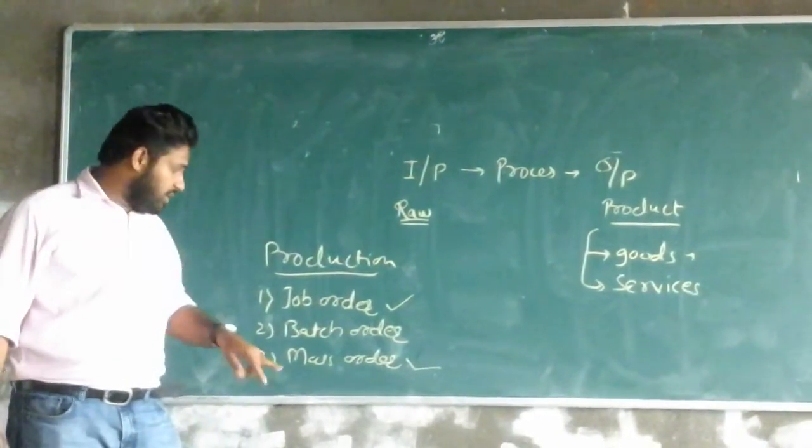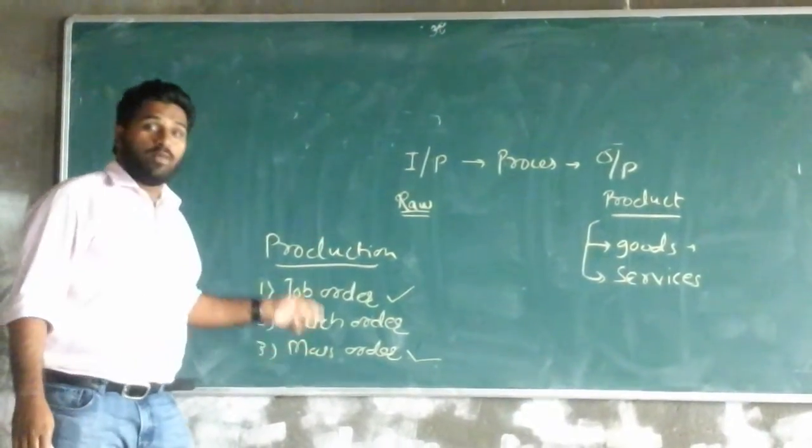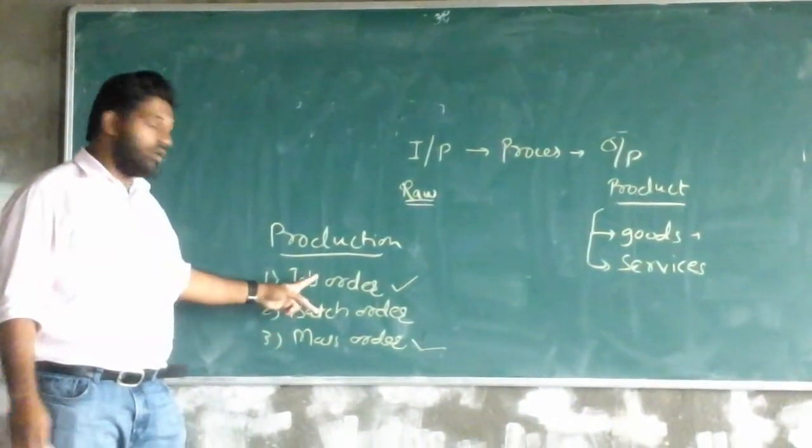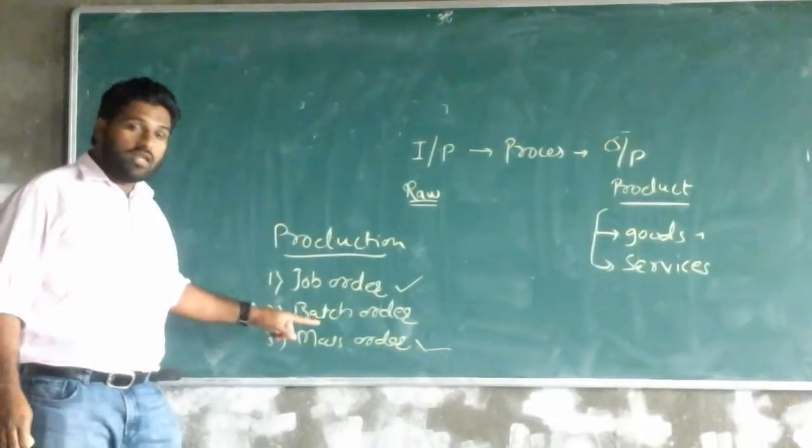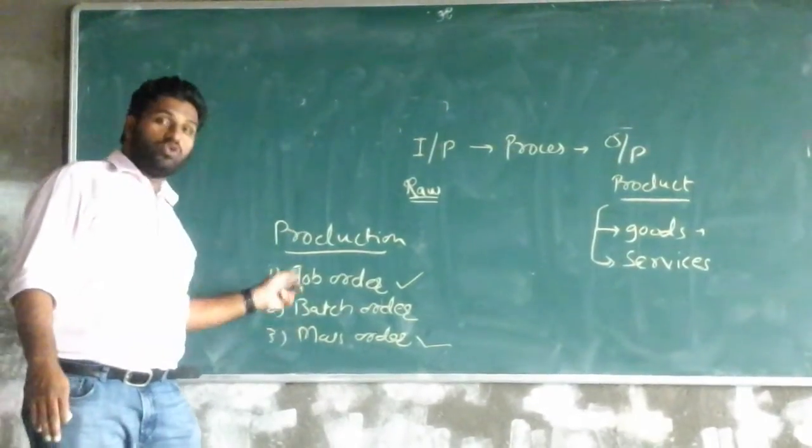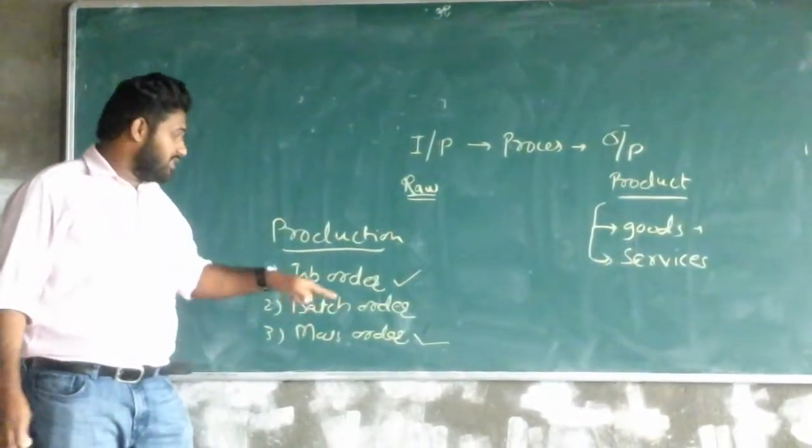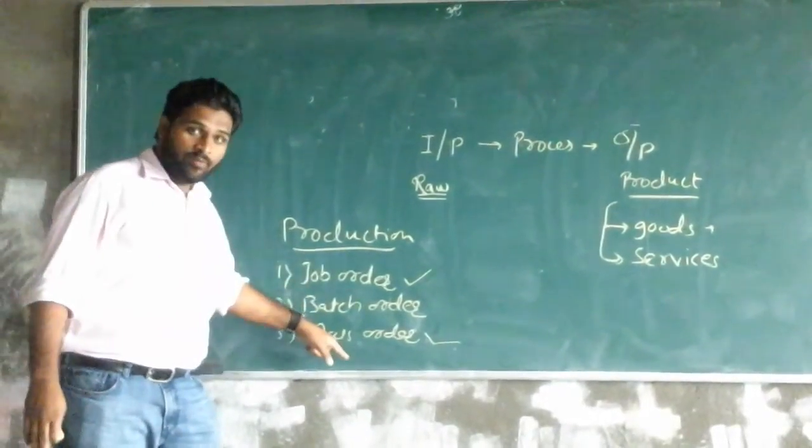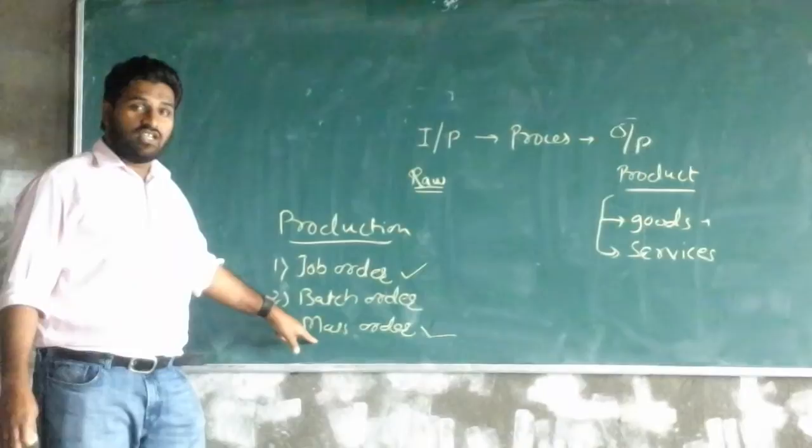In mass production industry, the cost of the product is very less as compared to other types. The human effort required is less than other types. Flexibility is very less.